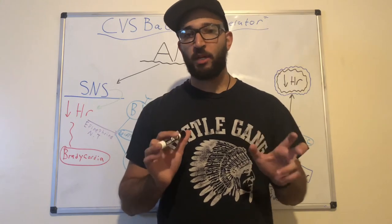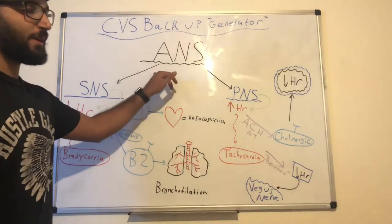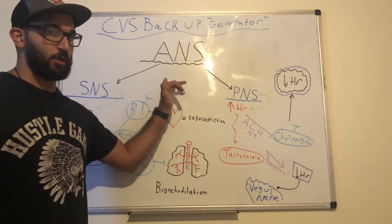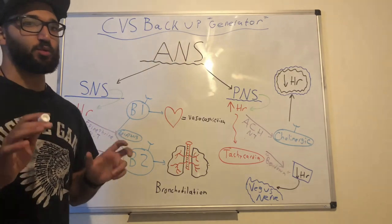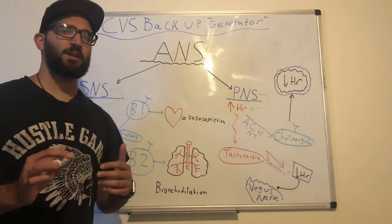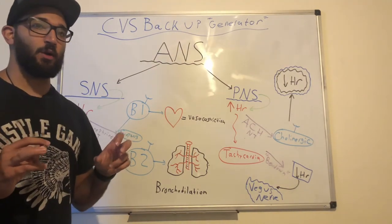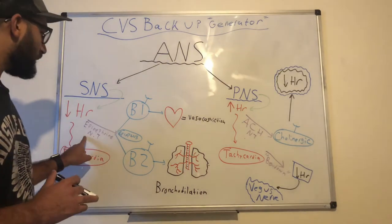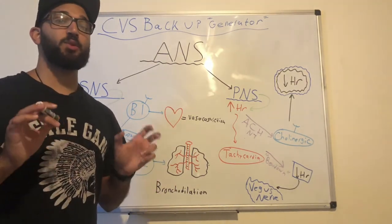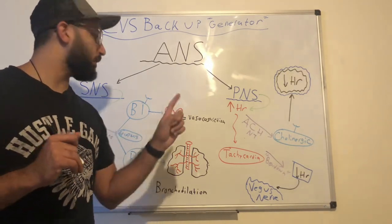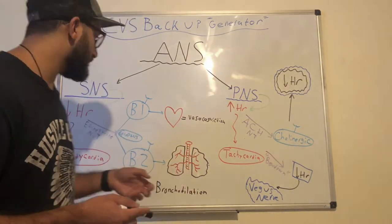I think of the heart as an electrical system — if there is no more electricity, we need a backup generator. That backup generator is our compensatory mechanisms: the autonomic nervous system, specifically the SNS and PNS. The sympathetic nervous system activates due to bradycardia — a low heart rate. Once your body detects a low heart rate, the SNS kicks on and sends out the neurotransmitter epinephrine to beta-1 and beta-2 receptors. The beta-1 receptor is associated with the heart — one heart — and vasoconstriction occurs.